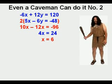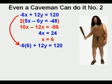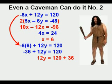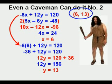He can now work on solving for y by substituting 6 back for x in the first equation. So, he has negative 6 times 6 plus 12y equals 120. He gets rid of the negative 36 by making it positive 36 on the right side. So, he ends up with 12y equals 156. So, y is 156 divided by 12, or 13. He writes down the coordinates at 6 comma 13.